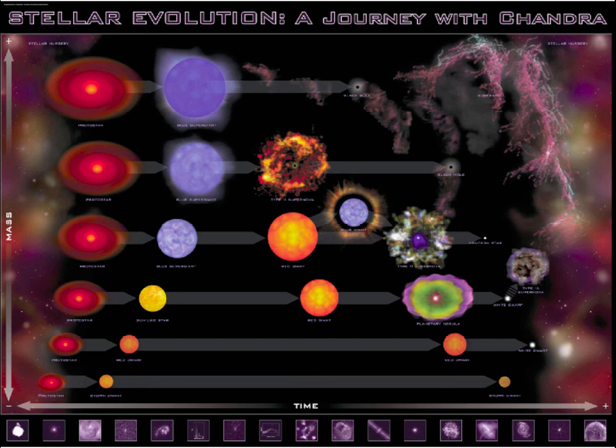They continue to exist. Every white dwarf, every neutron star, every black hole that's ever been made in our galaxy is still out there somewhere. Sometimes they're hard to see, sometimes they're easy to see. Depends what's around it. Thank you so much.